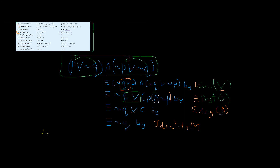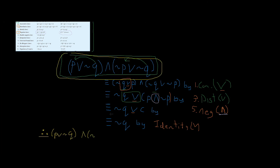Now we conclude our compound statement. We say 'therefore' — or 'thus', or any concluding transition word. So: p OR negation q AND negation p OR negation q is logically equivalent to negation q. That's your answer. If you liked this video, please subscribe to my channel and give it a thumbs up — it helps my channel grow. Leave any comments below, and I'll see you next time. Bye everybody!